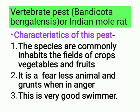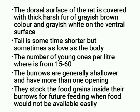Characteristics of this pest: the species commonly inhabits the fields of crops, vegetables and fruits. It is a fearless animal and grunts when in anger. It is a very good swimmer. The dorsal surface of the rat is covered with thick, harsh fur of greyish brown color and greyish white on the ventral surface. The tail is sometimes shorter but sometimes as long as the body.